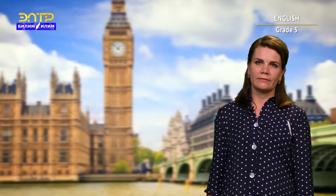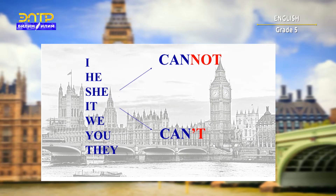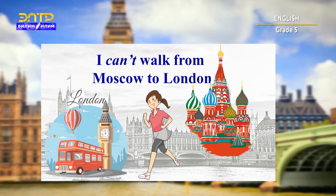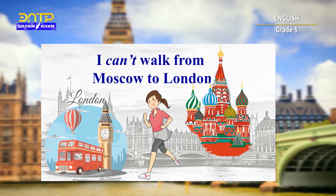And if you want to say that you don't know how to do something, you have to use the negative form of the word 'can.' I cannot — or we can use the short form: can't. I will tell you as a secret, of course, what I can't do. Repeat after me: I can't fly. I can't walk from Moscow to London.